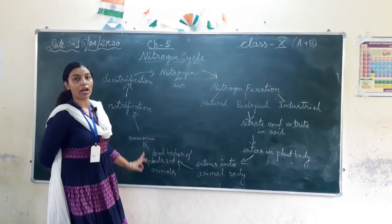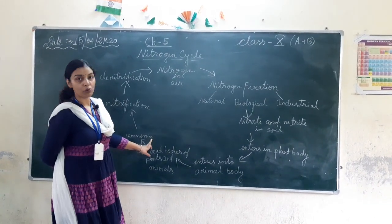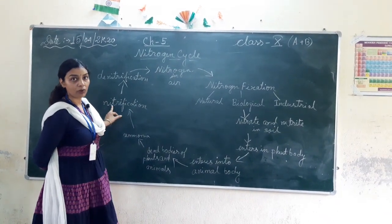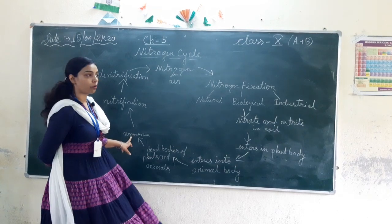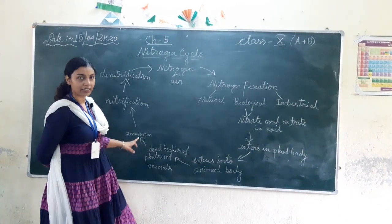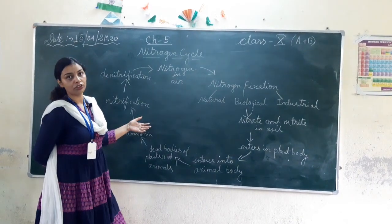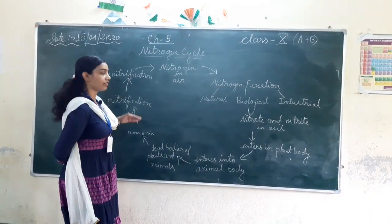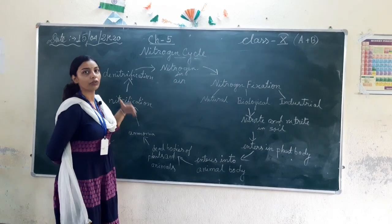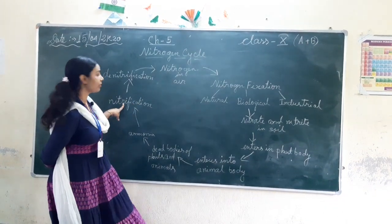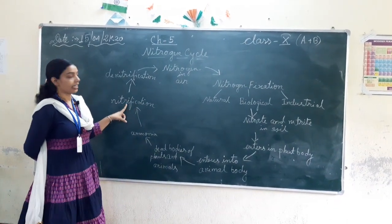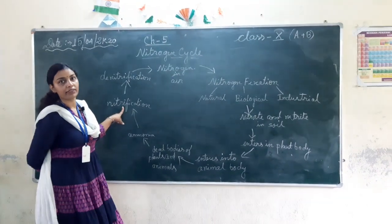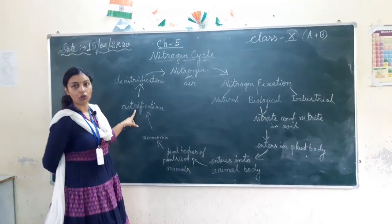After the process of ammonification, the next process is nitrification. What is nitrification? In the process after ammonification, the ammonia turns first into nitrite and then into nitrate — this is the nitrification process. In this process, different types of bacteria help, such as Nitrobacter or Nitrosomonas.